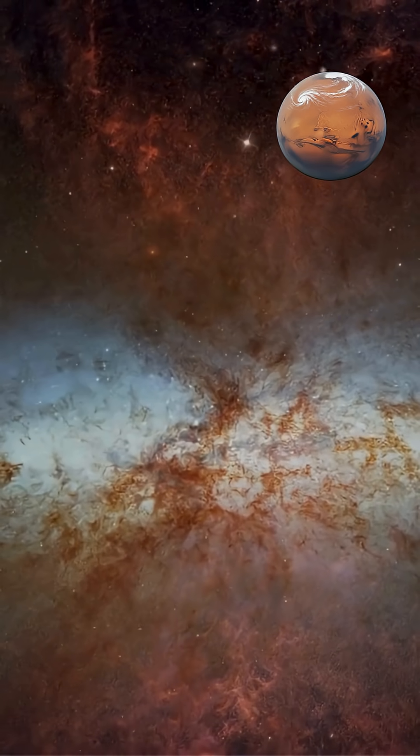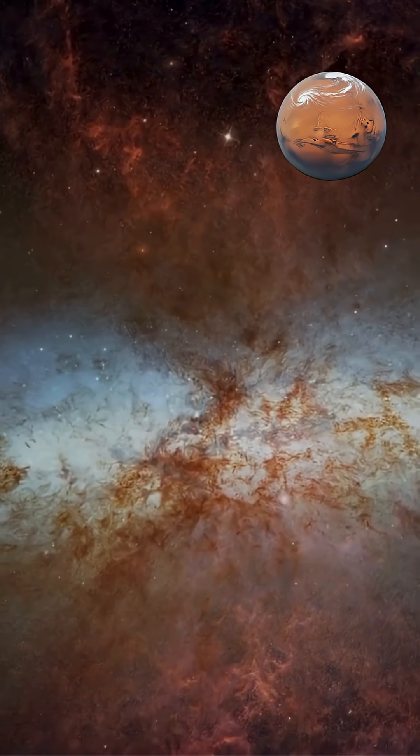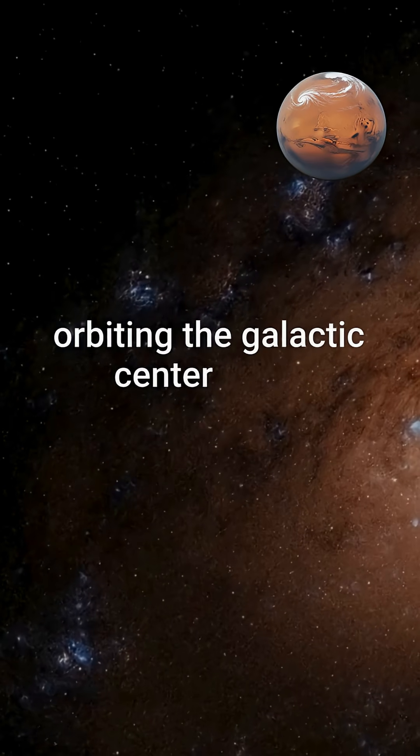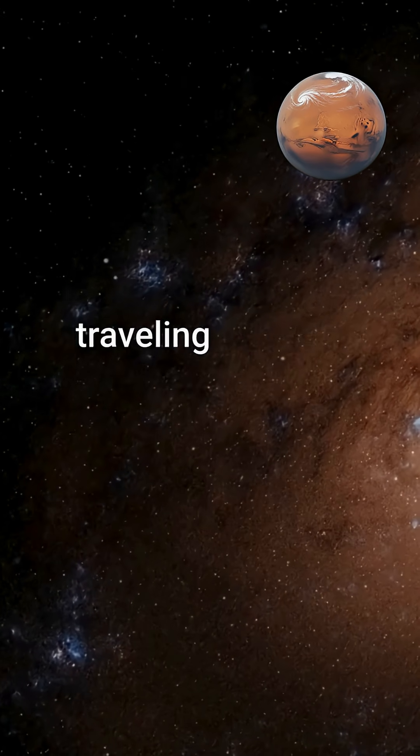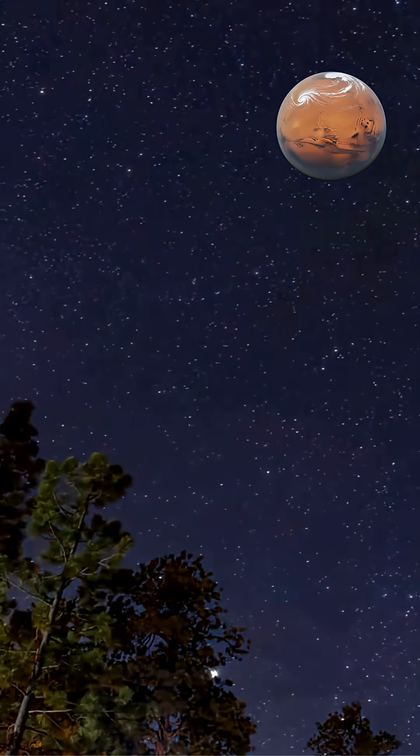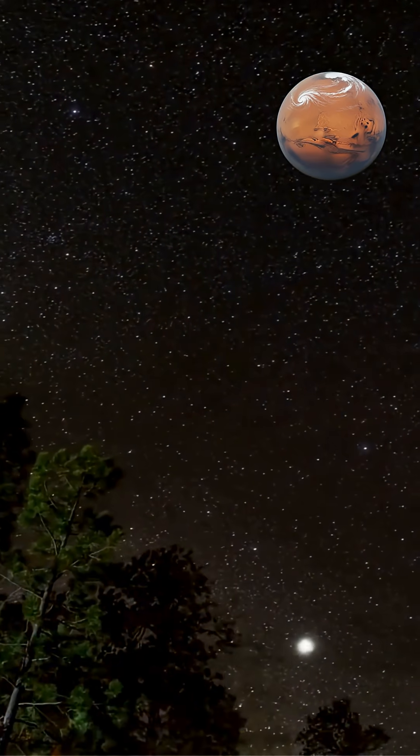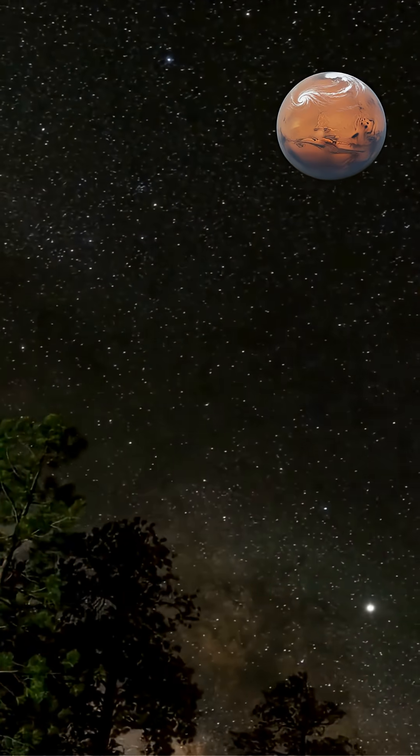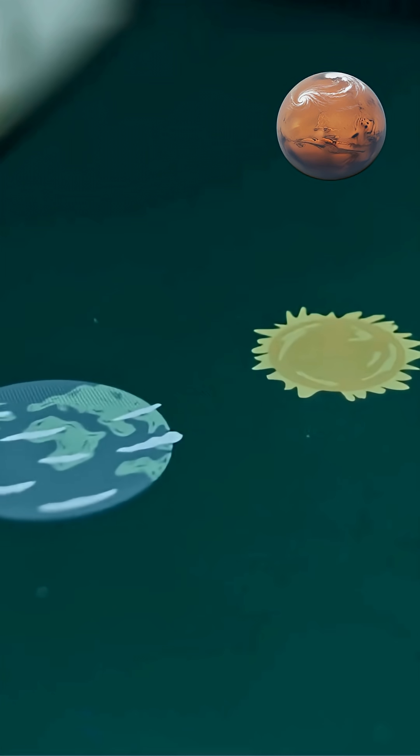However, stars actually move at tremendous velocities, orbiting the galactic center while simultaneously traveling through space relative to neighboring stars. Stars in our Milky Way galaxy orbit the galactic center in nearly circular paths similar to how planets orbit the Sun.